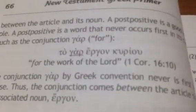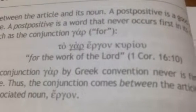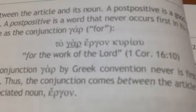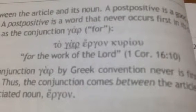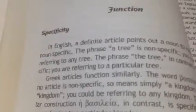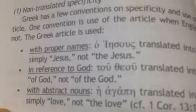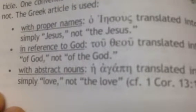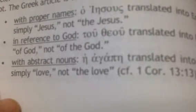For example, 'for the work of the Lord' — notice that the word gar splices ta ergon. Gar is a postpositive conjunction. In the translation we bring gar up front, but from the concept of concord — grammatical agreement — ta and ergon go together for 'the work of the Lord.' Now, specificity: articles can specify, especially a definite article. We can add specificity — not just any kingdom, but hē basileia, 'the kingdom.' Sometimes we don't translate specificity: ho Iēsous — we don't say 'the Jesus,' we leave it untranslated. The same for God — we just say 'God,' not 'the God.' There's only one God. And agapē, an abstract noun, is just 'love,' not 'the love.'